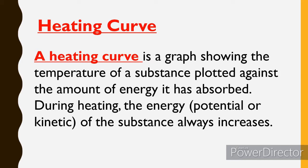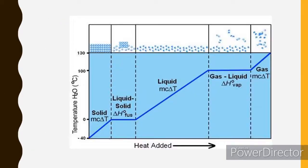A heating curve is a graph showing the temperature of a substance plotted against the amount of energy it has absorbed. During heating, the kinetic energy of the substance always increases. The diagram shows the liquid state and the arrangement of particles in liquid. There is a given amount of heat energy involved, described by an equation, and from liquid to gas the transition occurs at 100 degrees Celsius.